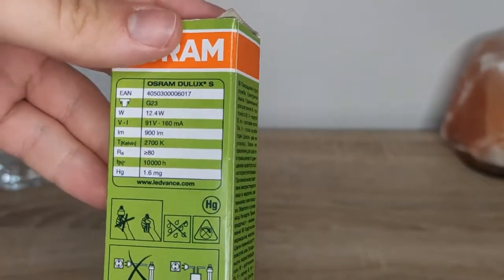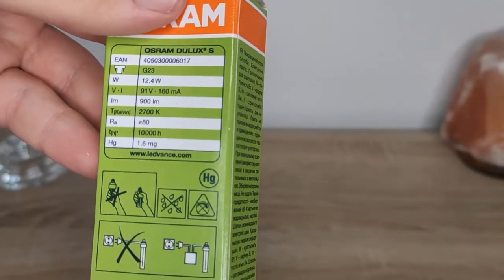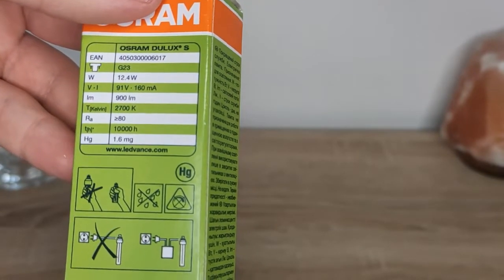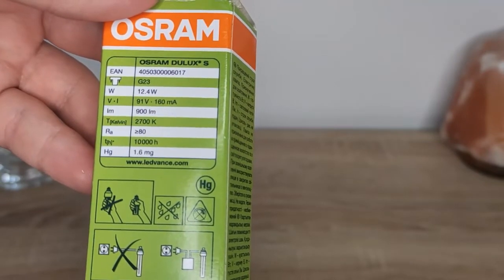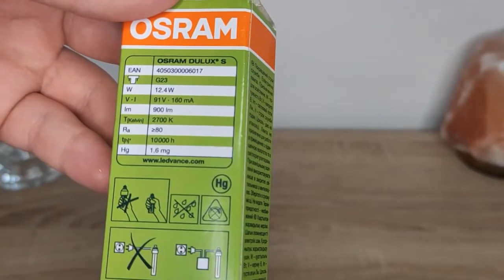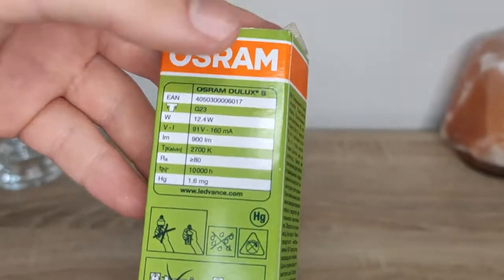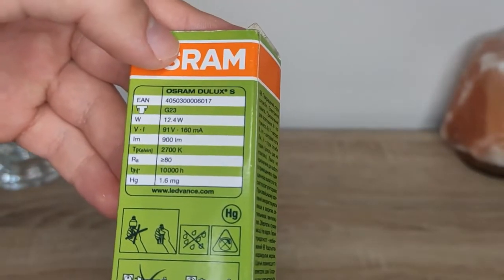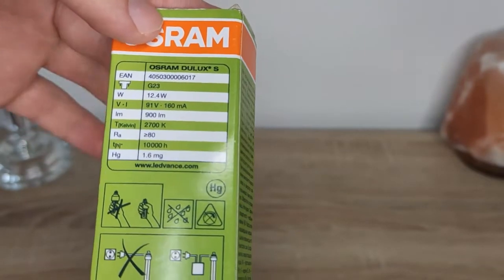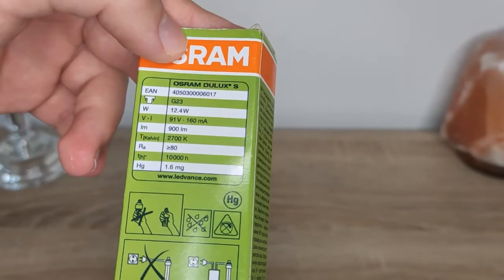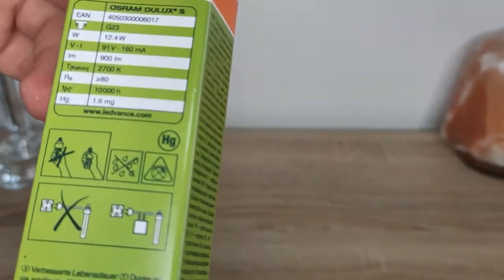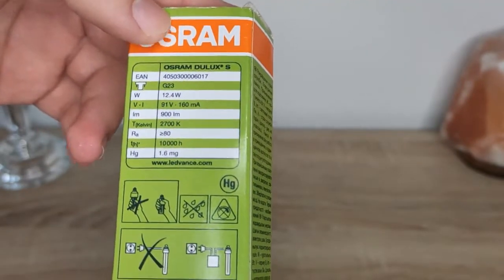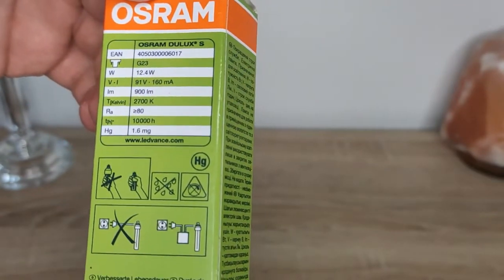We can see that it is using 12.4 wattage, and we have here the voltage times current, which is 991 volts and 180 milliamps, which means that this is the voltage that this is really holding on. The temperature is 2700 Kelvin, and it has a CRI of 80 above 80, and it lasts 10,000 hours, which is roughly 10 years, which is actually not bad. It has mercury of around 1.6 milligrams of mercury.